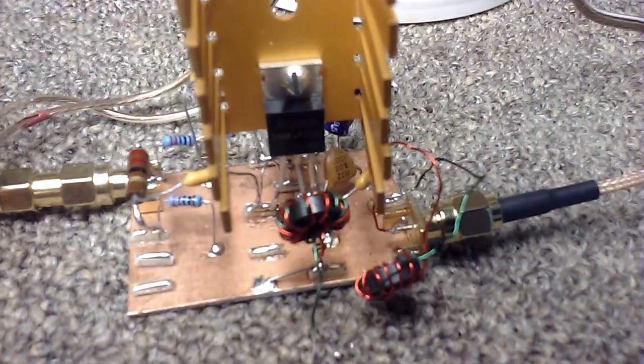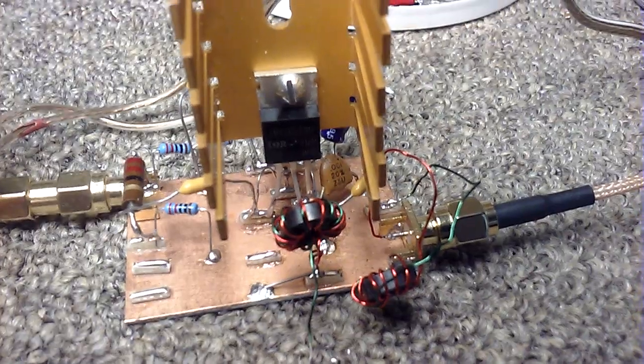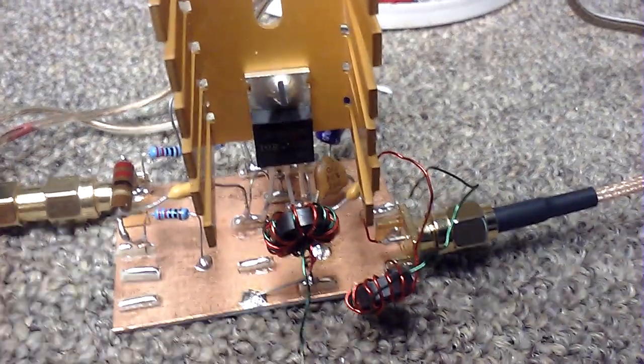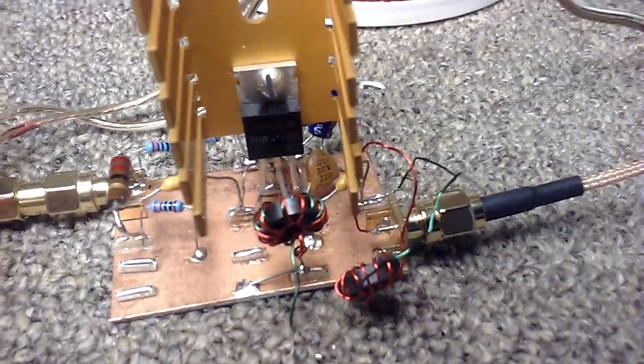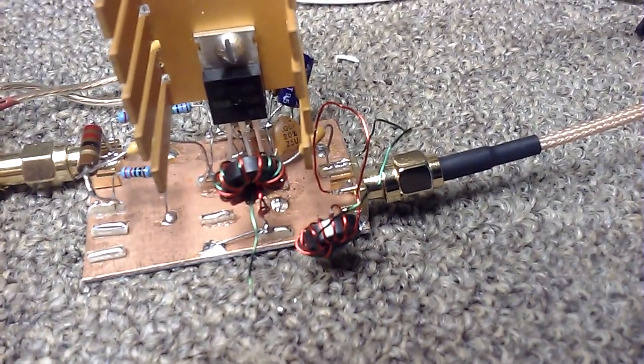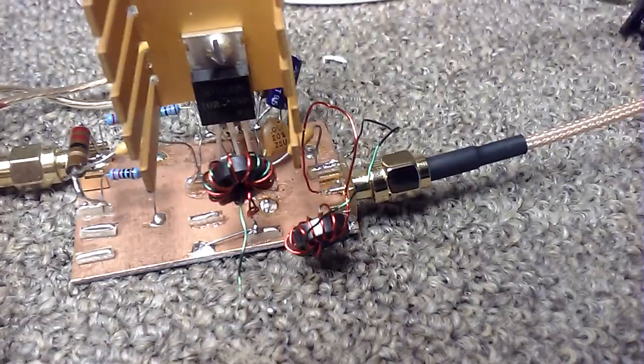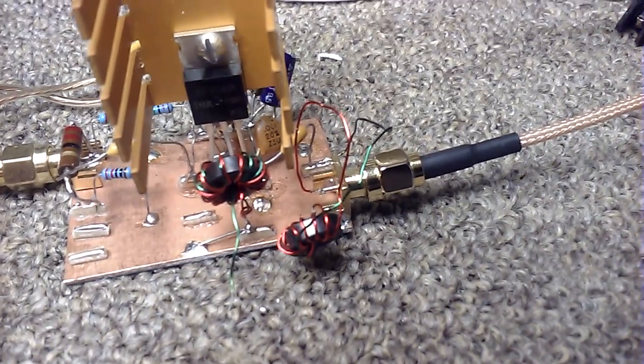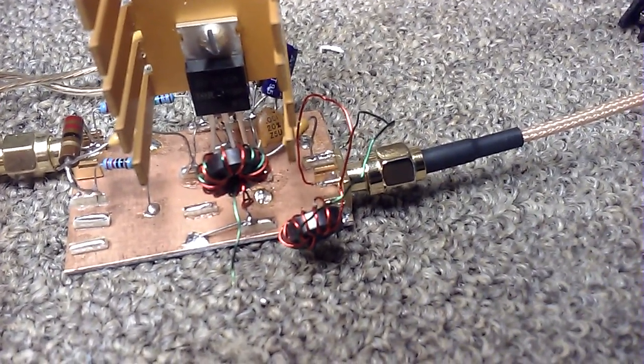And I've got an 11 turn T3743 choke on the power supply and an output transformer now of three turns on the primary and eight turns on the secondary going to the 50 ohm load.